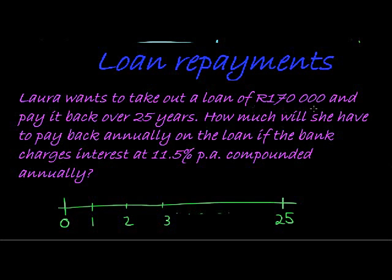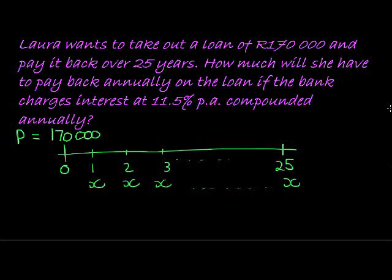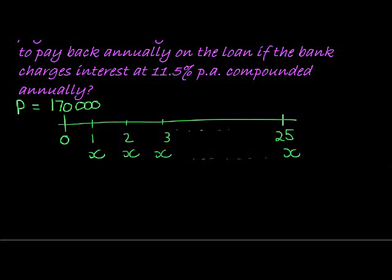Well, she wants to take out a loan of that much, and she wants to pay it back over 25 years. So she's already received it, or that's the idea at least is to get 170,000. Which means on my timeline, it is a present value and not a future value. And then she's going to pay it back starting in one year's time, all the way up to 25 years where she will make her final payment.